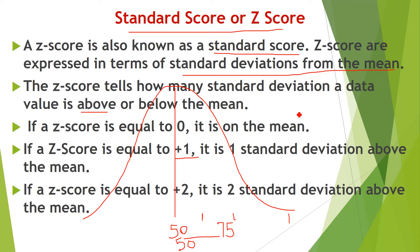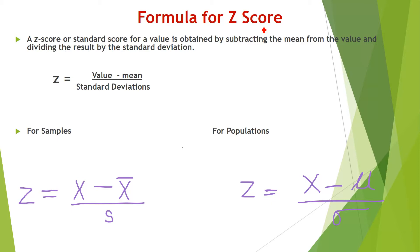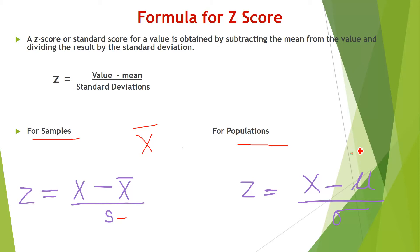In short, Z scores are expressed in terms of standard deviations and measure deviations from the mean. The formula for Z score is: Z = (X − X̄) / S for a sample, where X̄ is the sample mean and S is the sample standard deviation. For a population, the formula is Z = (X − μ) / σ, where μ is the population mean and σ is the population standard deviation. A sample is a subset of the population.